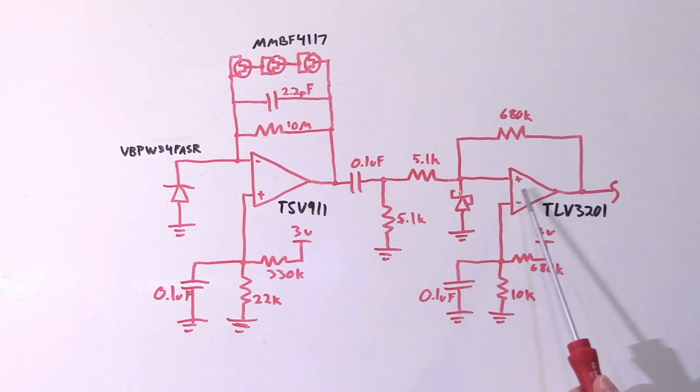And finally, the comparator selection wasn't really critical besides space and power consumption requirements. The TLV3201 from Texas Instruments fit the bill quite nicely and comes in a nice little SOT-23 package just like the op amp. So that was quite a nice fit for this project.